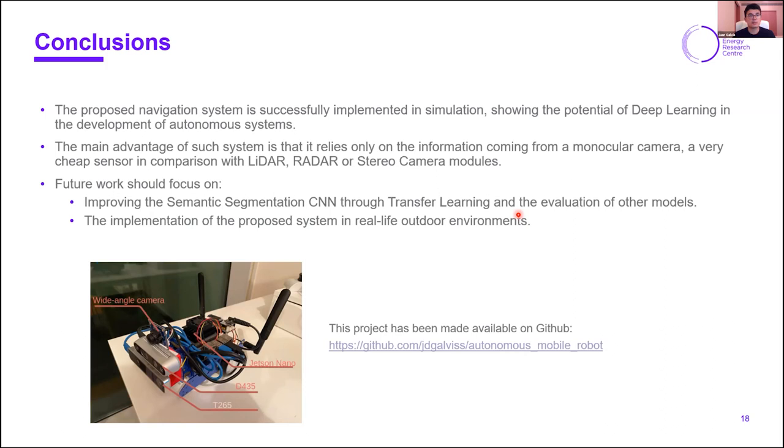This is a work in progress, so future work on this project will focus on first improving the semantic segmentation convolutional neural network through transfer learning and the evaluation of other models. The convolutional neural network that we implemented was pre-trained on the Cityscapes dataset and was not further trained, so we can say that the results can be improved a lot if we do further training on data from the simulation environment. Second, the proposed approach should be evaluated in a real life outdoor environment. For this, we have already started working on a development platform which can be seen on this image. It has a Jetson Nano, a wide-angle camera, and some stereo cameras for validation. Finally, the project has been made publicly available on GitHub.